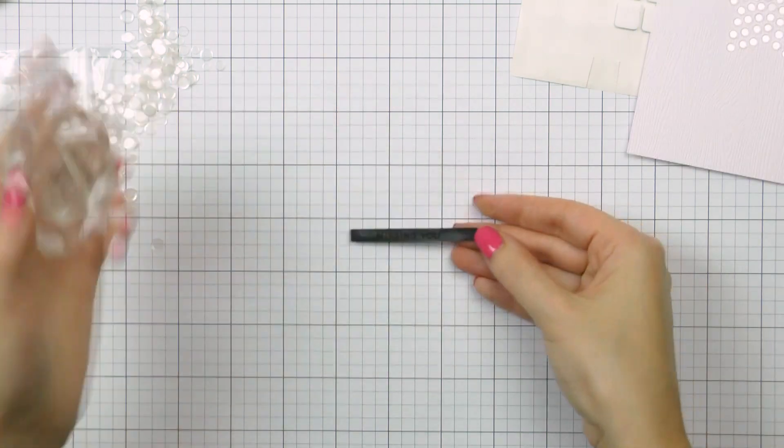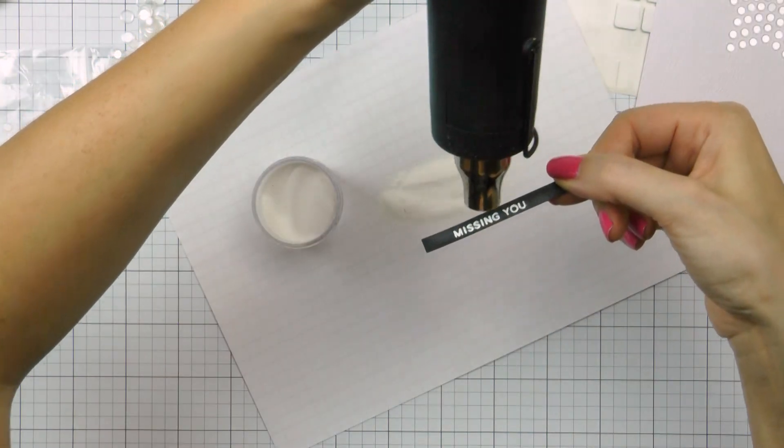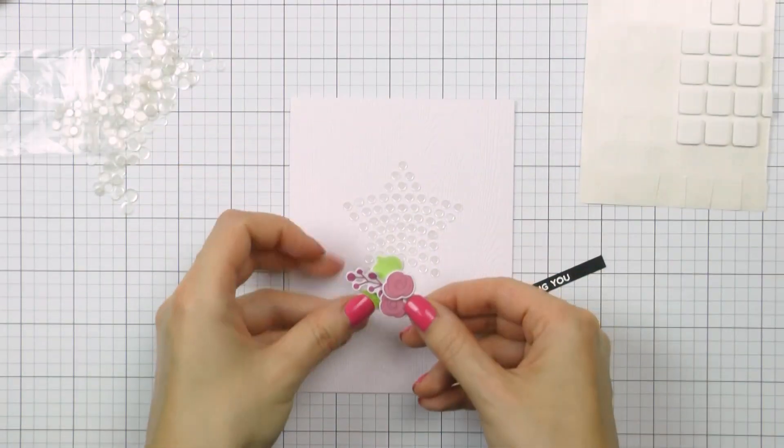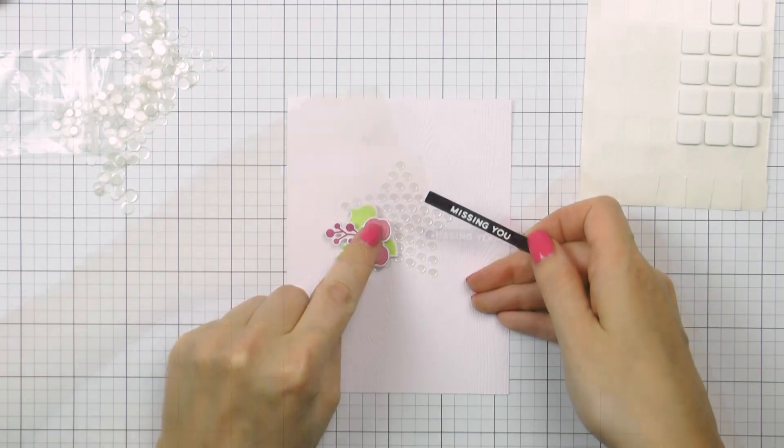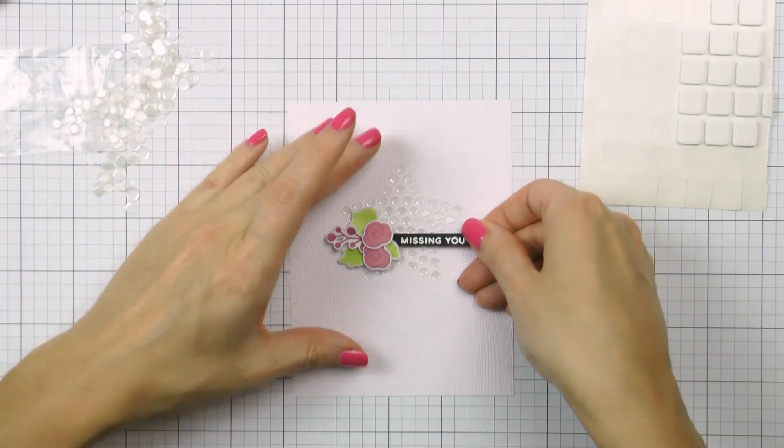I stamped it in clear sticky ink onto black paper and heat embossed in white embossing powder. I cut one of the ends of my strip into a V shape and foam mounted it onto the card.